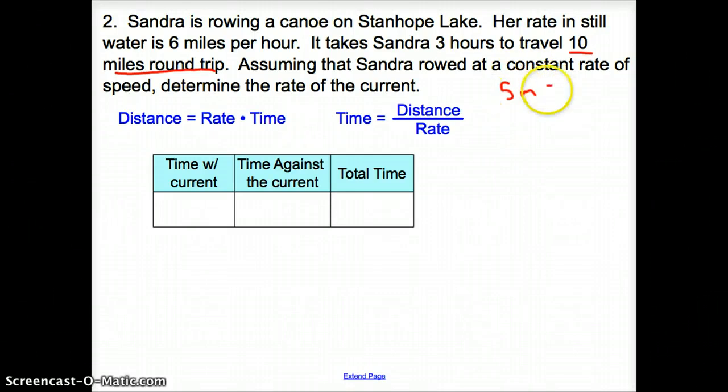We set up a table and then we look for some keywords. Time with current. Time gives us distance over rate. How far did we travel with the current? We went 10 miles round trip, so we went 5 miles one way. So we have distance is 5 and that's going to go over, how fast does she go in still water? That's going to be 6 miles per hour plus the rate of the current, plus R. How long did it say? It said it took her three hours.